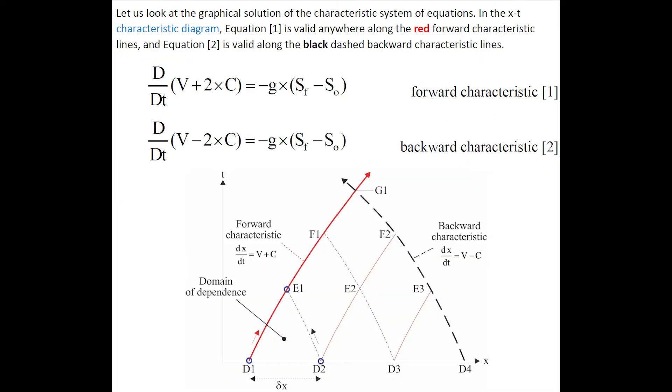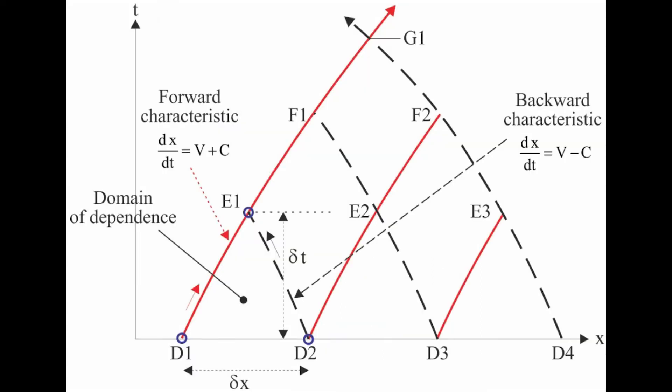Let us look at the graphical solution of the characteristic system of equations. In the X-T diagram, equation 1 is valid anywhere along the red forward characteristic lines, while equation 2 is valid along the black dashed backward characteristic lines.